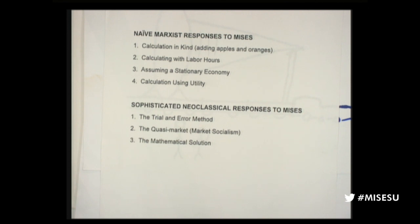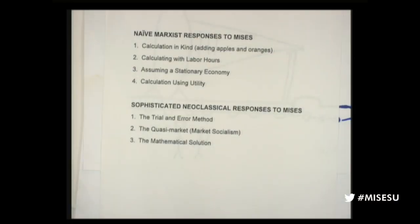A fourth early objection was calculating with utility — somehow figuring out how much satisfaction individuals get from different goods. But what is a 'util'? How can you figure out a quantity of utility? It's an intensive magnitude, not an extensive one — you can't see it in the objective world. The subjective world is real and it drives the objective world, but we need an index — a common denominator in the objective world to reflect our values — and those are prices. You don't have that here. Mises pretty much smashed all those early arguments.